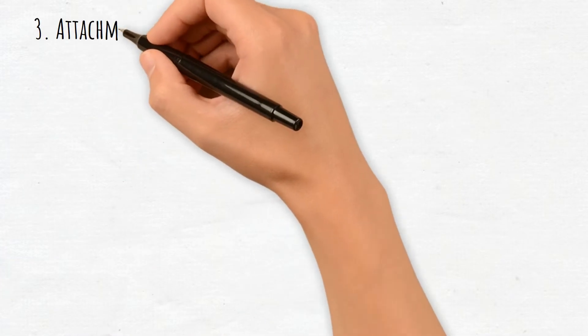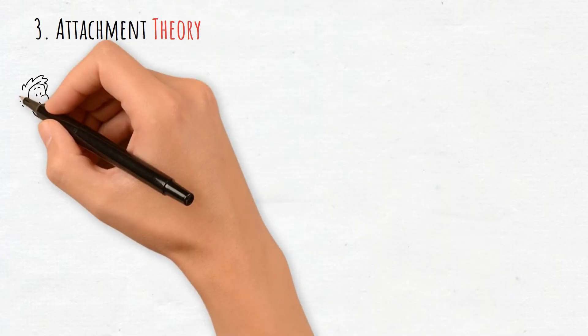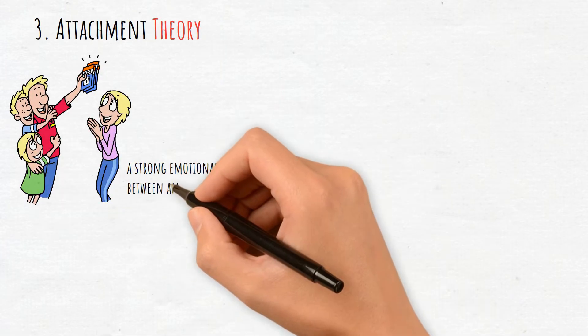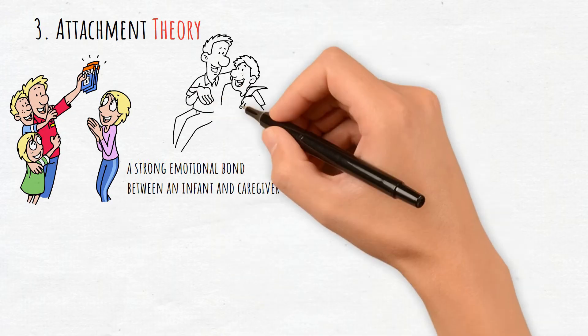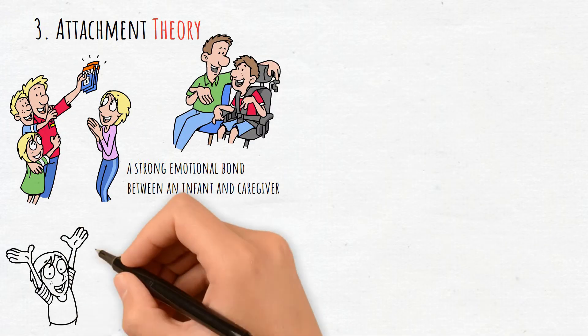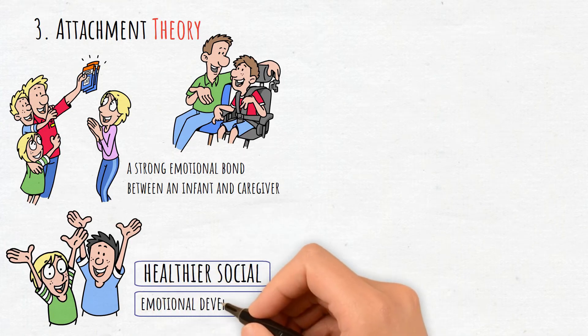3. Attachment Theory. This theory emphasizes the importance of a strong emotional bond between an infant and caregiver, which influences relationships throughout life. Secure attachment fosters healthier social and emotional development.